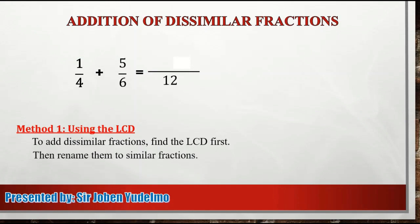Next step, rename them to similar fractions. To rename them to similar fractions, we are going to divide the LCD by the denominators of each fraction. So first, i-divide natin ang 12 by the denominator of the first fraction, which is 4. So 12 divided by 4 is equal to 3. And then, we are going to multiply the result by the numerator, which is 1. So 3 times 1, we get 3.